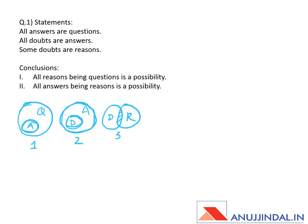There can be another possibility for the same statement — some doubts are reasons. We can draw a diagram like this also: if these are doubts and these are reasons, you can see some doubts, this part, are also reasons. Let's mark it number four.